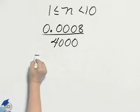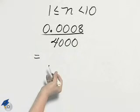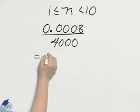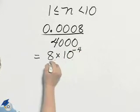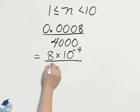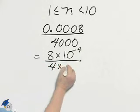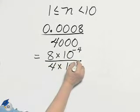if I convert this into scientific notation, I would have 8 times 10 to the negative 4 divided by 4 times 10 cubed.